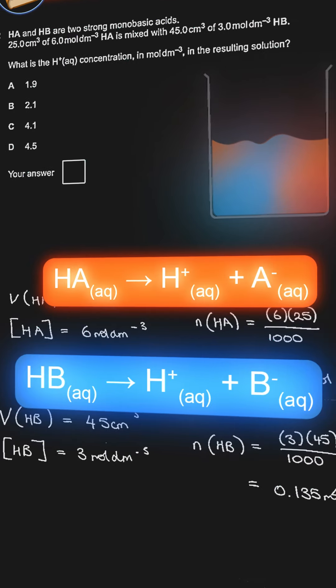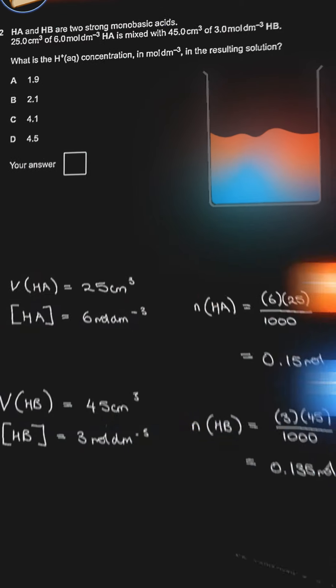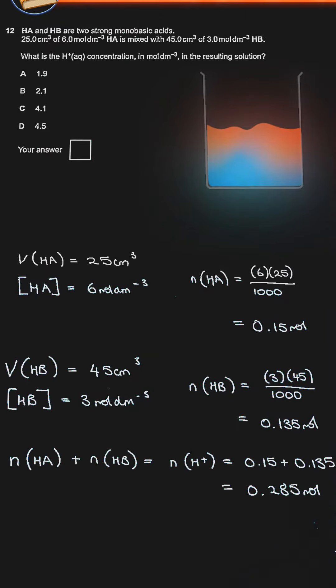As they're both strong acids, they completely dissociate to give H plus and A minus or B minus. So the moles of H plus equals the moles of HA plus HB. So we get 0.285 moles.